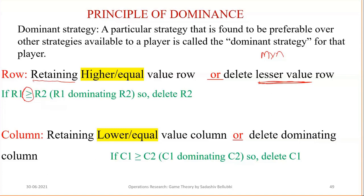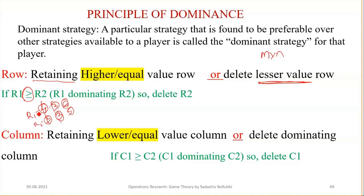For example, if R1 has values 4, 3, 6 and R2 has values 3, 3, 5 — comparing respectively: 4 is greater than 3, 3 is equal to 3, and 6 is greater than 5. All values of R1 are greater than or equal to R2, so R1 is dominating R2 and we can delete R2.